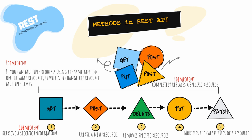PUT completely replaces a specific resource. PATCH is similar in some ways to PUT because PATCH modifies the capabilities of a resource. The difference between PUT and PATCH is that PATCH sends a request containing only the changes to the resource, not a completely updated resource.